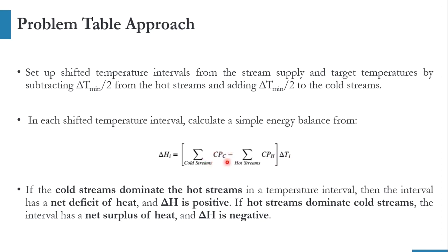In our case, CP of the cold stream is 1 and CP of H is 1.8, so it is 1 minus 1.8 multiplied by the temperature interval. You might be confused, so we will now shift to the problem table approach.